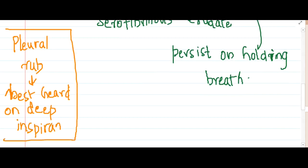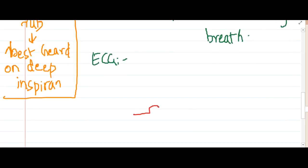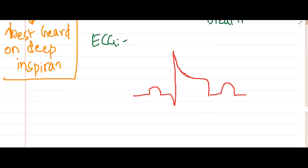If you see the ECG findings, on ECG you will find this pattern. This is the P wave, QRS. Here you have this saddle-type ST segment elevation. If you see here, this ST segment elevation is seen which is concave upwards. This is seen in pericarditis.